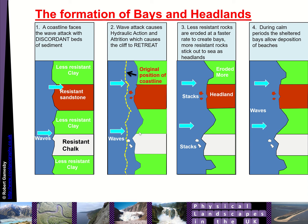Those processes would cause the cliff line to retreat. The less resistant rocks such as the clays would be eroded more, and the more resistant rocks would be eroded less. The more resistant rocks would be left as headlands — sometimes with stacks at the end — while the less resistant rocks would be eroded into bays. During calm periods, the sheltered bays allow deposition on the beaches, as you can see there.